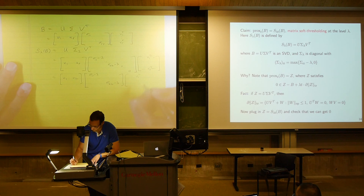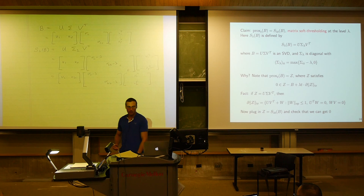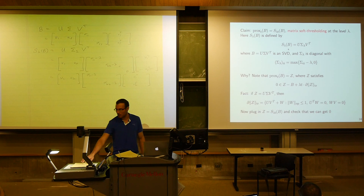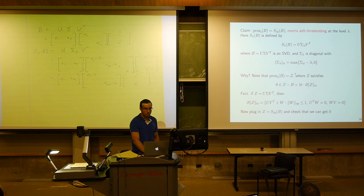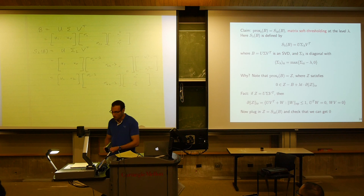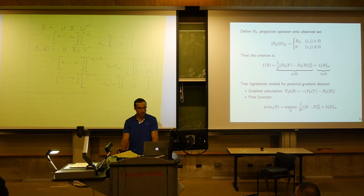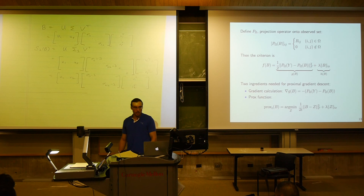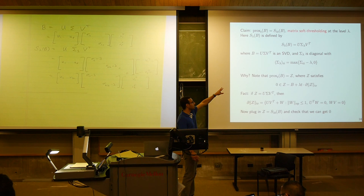To verify this is indeed the prox operator, we apply subgradient optimality: take a subgradient of the prox criterion and set it equal to zero. The smooth part's gradient is z minus b, and we need some subgradient gamma of the trace norm at z to make the sum zero. So it suffices to check that when z equals the matrix soft-thresholded value, there exists a valid subgradient of the trace norm that satisfies the optimality condition.